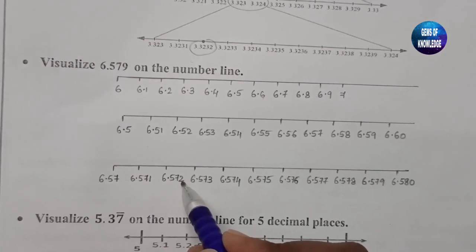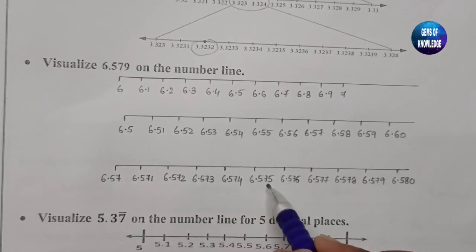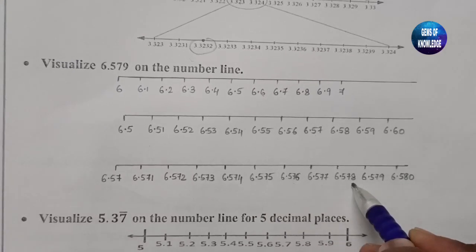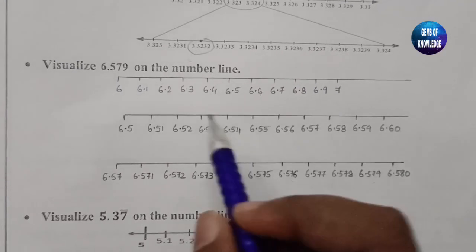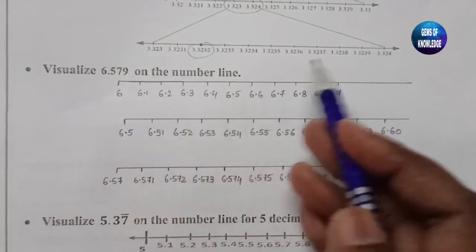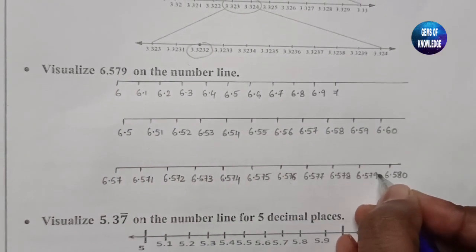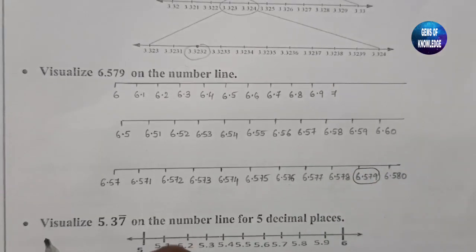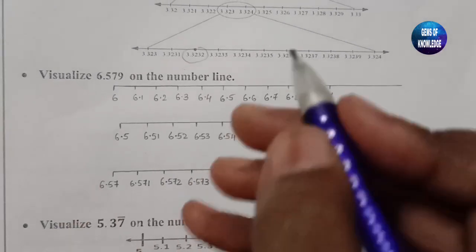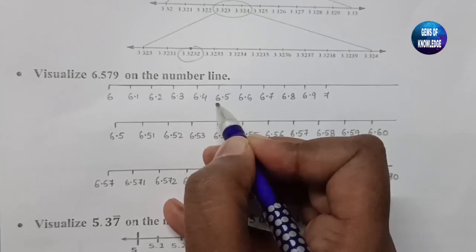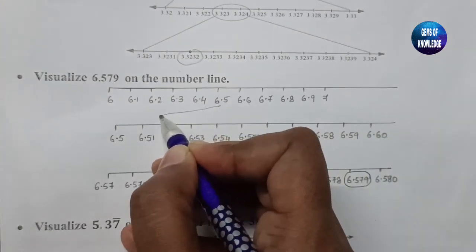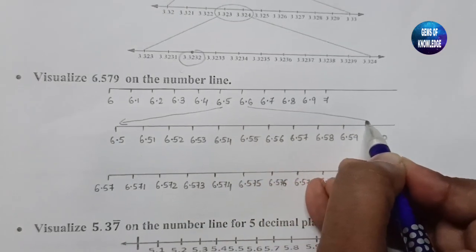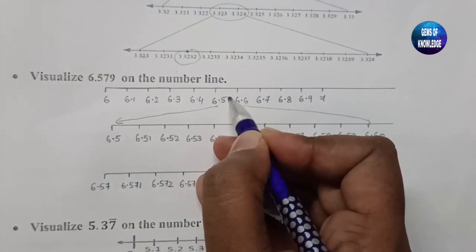After expanding, we can see 6.571, 6.572, 6.573, 6.574, 6.575, 6.576, 6.577, 6.578, and 6.579. We need 6.579, so we circle it. Here we show the expanded form — we have expanded this in two parts to locate the number.